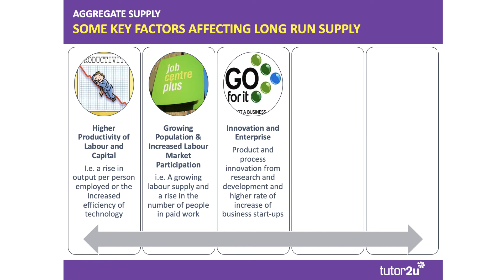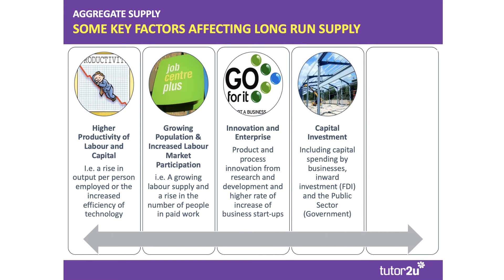A third factor affecting aggregate supply in the long term is innovation and enterprise — product and process innovation from research and development, and from new business startups with new business models and products. Innovation is the commercial exploitation of new ideas; it means making more with the same resources, getting more output from the same inputs, which is obviously linked to productivity.